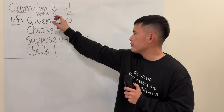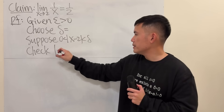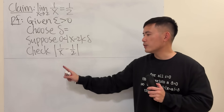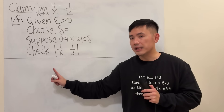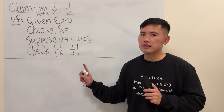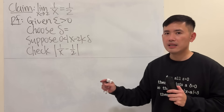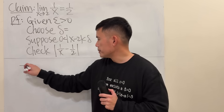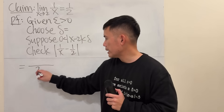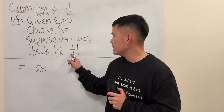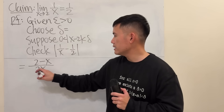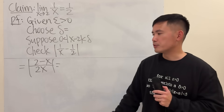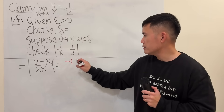We are going to check the absolute value of the function minus the limit: one over x minus one over two, and hopefully show it is less than epsilon. First let's do some algebra — get the common denominator, which is 2x. We get 2 minus x over 2x, and I'm going to switch the order of the subtraction, just negating the result.